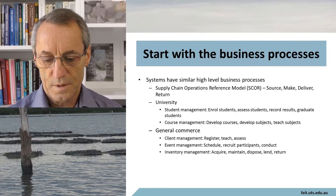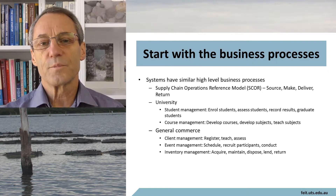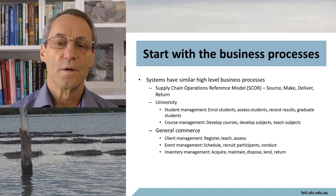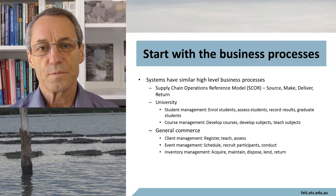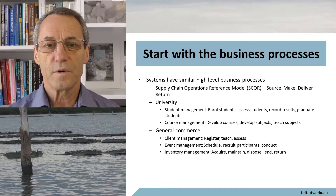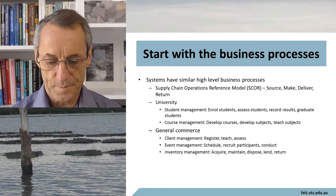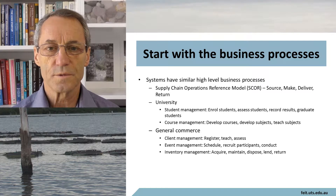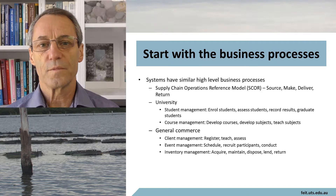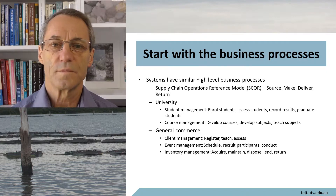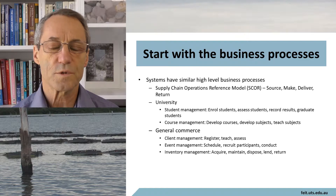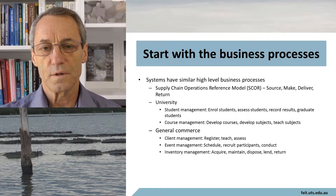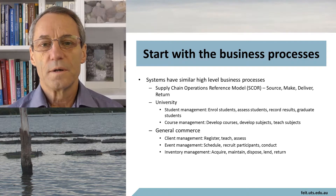How do you get started? You could do a lot worse than to start with the business process and try to understand it. If you're going to produce a lot of products, what's going to be common across the customers? Look at the business processes across a number of potential customers. For example, there is the Supply Chain Operations Reference model — the SCOR model — which starts with the very basic high-level categorization of source, make, deliver, and return. Source: find who can do what you want. Make: get it made. Deliver: deliver it from the maker to the consumer. Return: return it if it's end of life or defective.